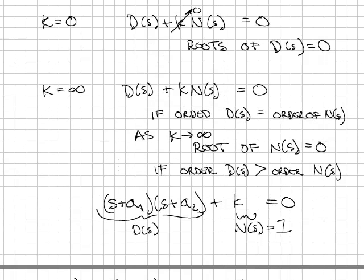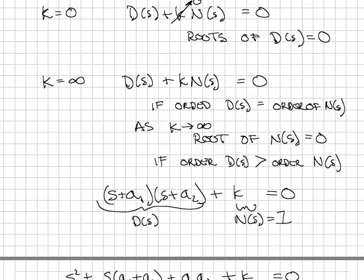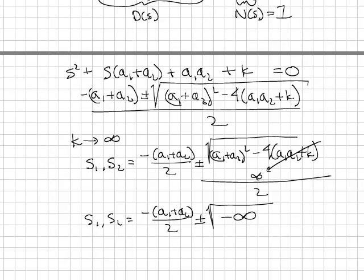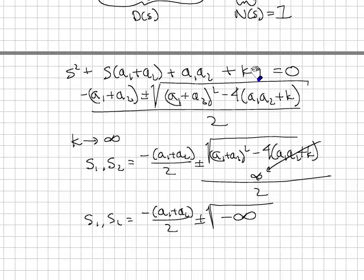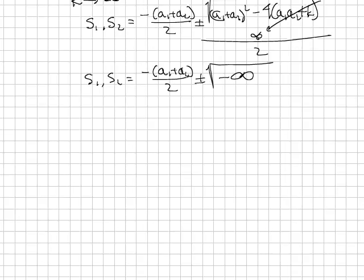Let's go back to our case when k equals infinity. When k equals infinity, if the order of D(s) and N(s) are the same, they are polynomials with the same order, then the solution as k goes to infinity will be the roots of just N(s). In the second order case, what we saw was that if N(s) has an order of 0, D(s) has an order of 2, then the roots go to some real value plus or minus an imaginary. I'm not going to do any further derivation.